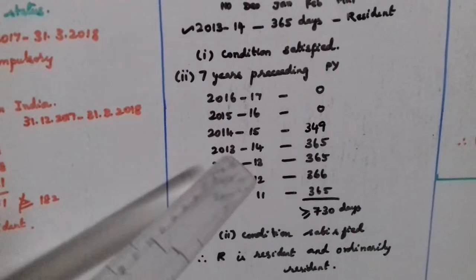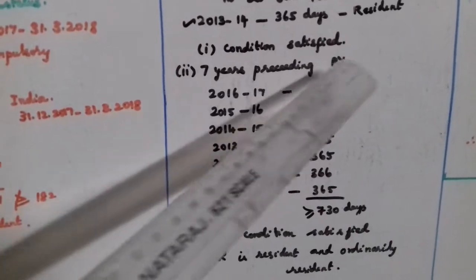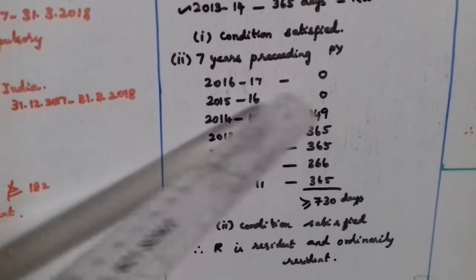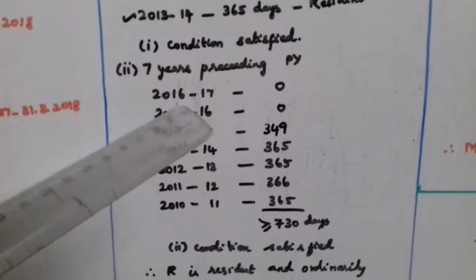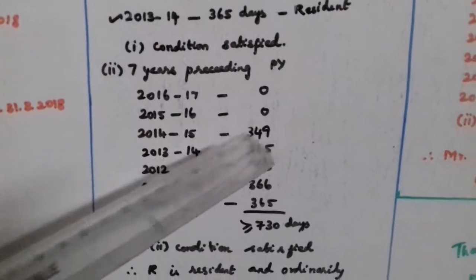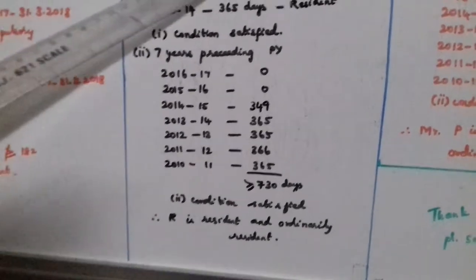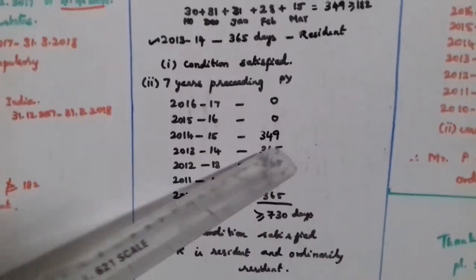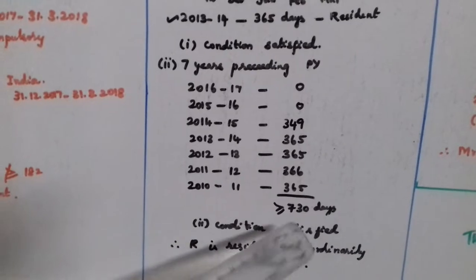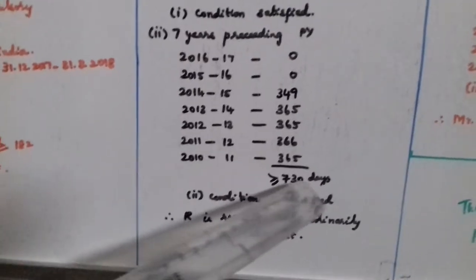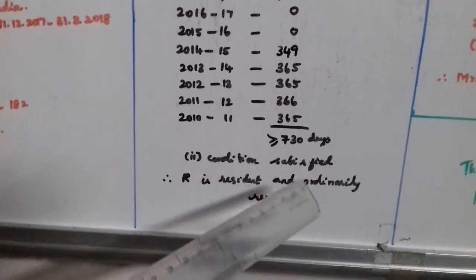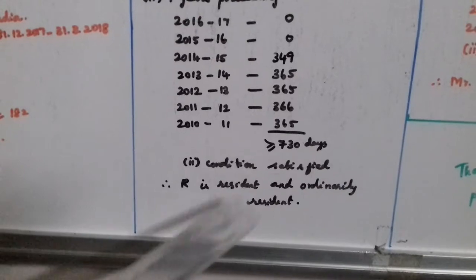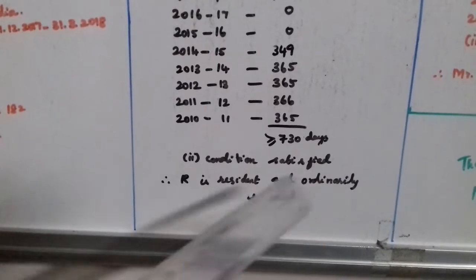Second condition: stay in India during the 7 years preceding the previous year. The total is greater than or equal to 730 days. The second condition is satisfied. He is a Resident and Ordinarily Resident. Thank you, please subscribe.